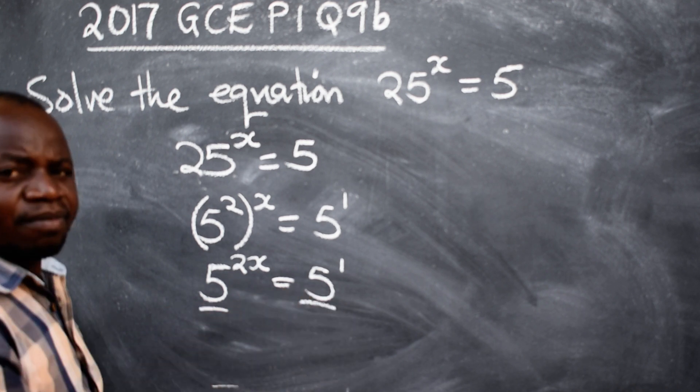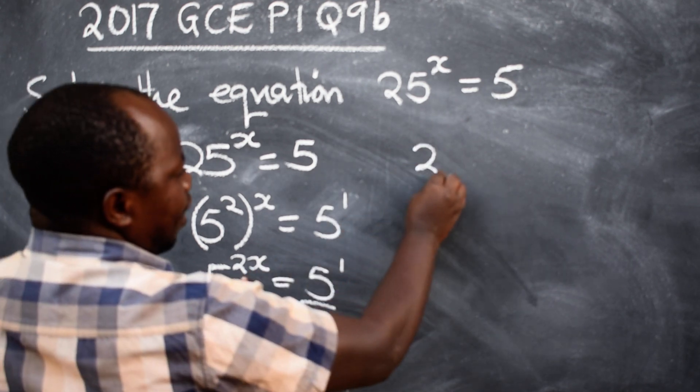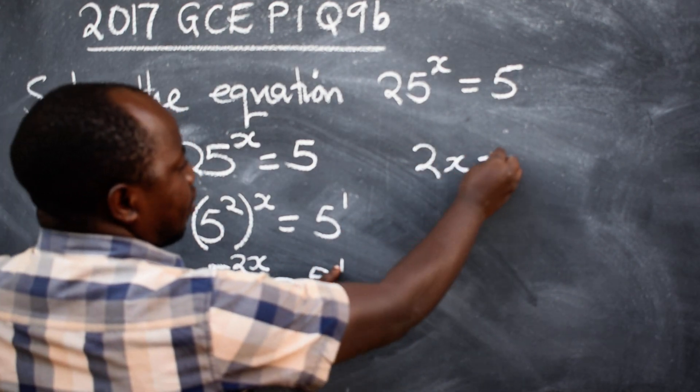Now that the bases are the same, you just equate the powers. So, this side we have 2x. This side we have 1. It's equal to 1.